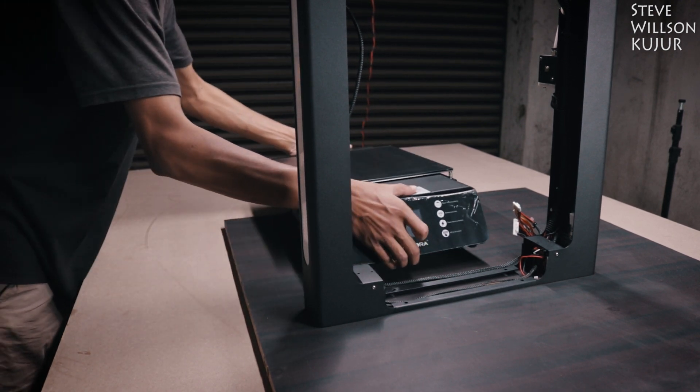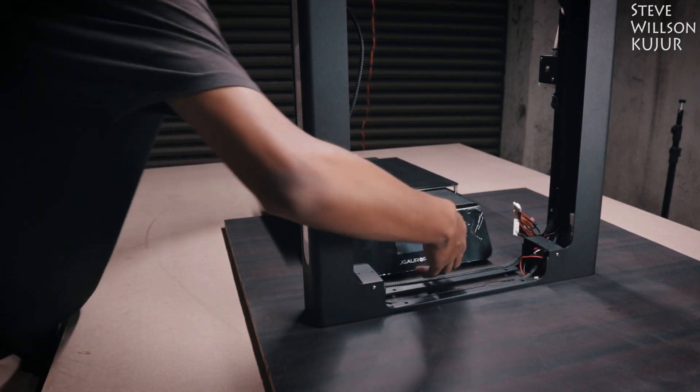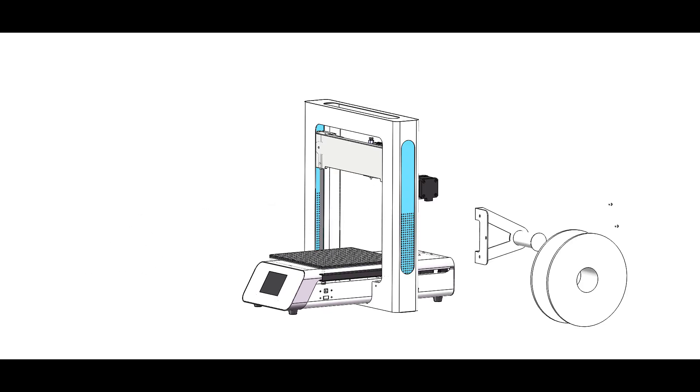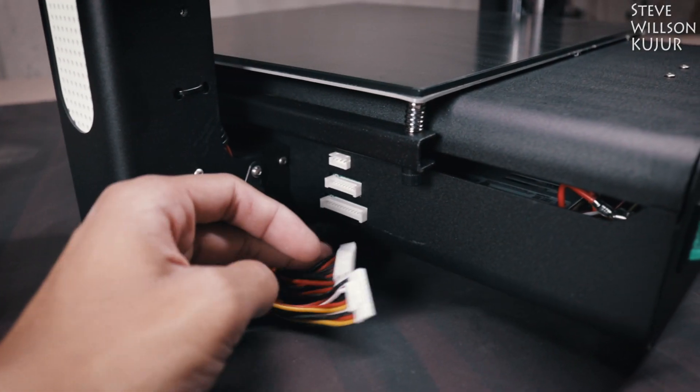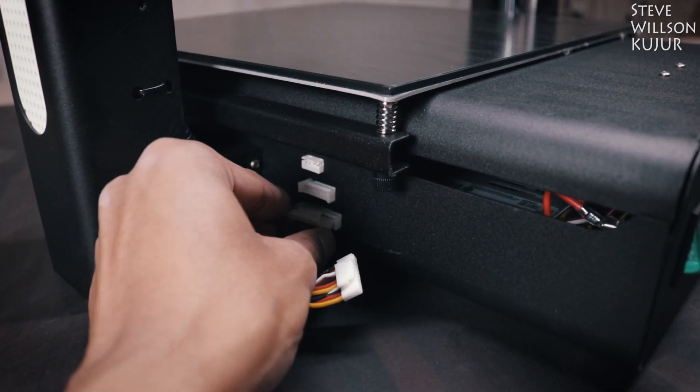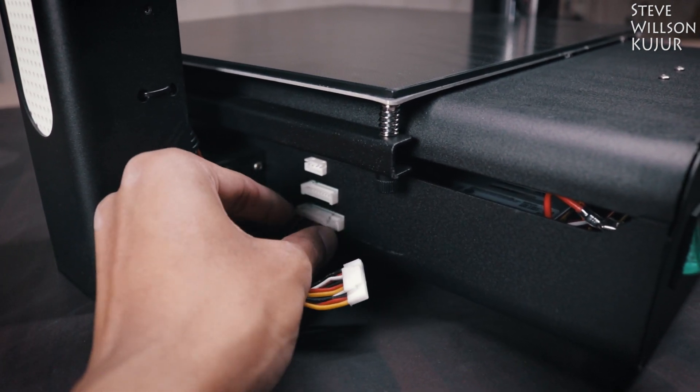This printer comes pretty much pre-assembled. You only need to screw 4 screws on the bottom and 3 screws to hold the filament stand. Now you only need to connect these 3 connectors. The bigger one and the middle one and the upper one.